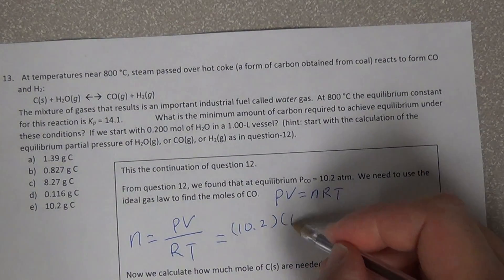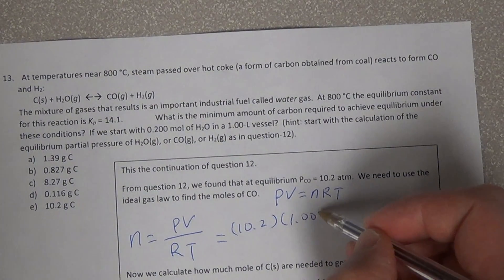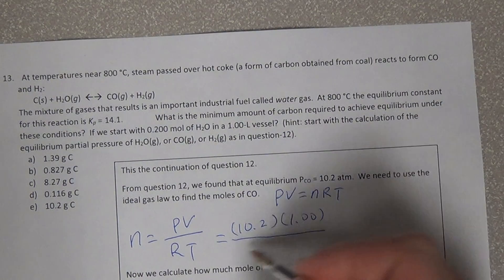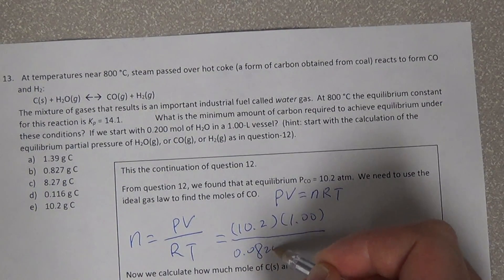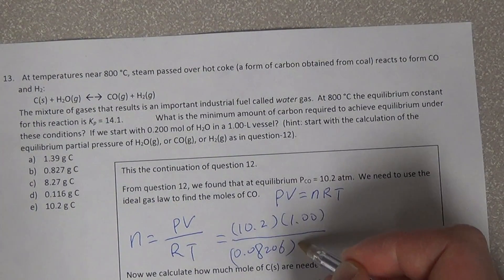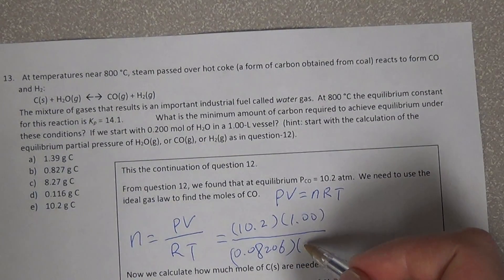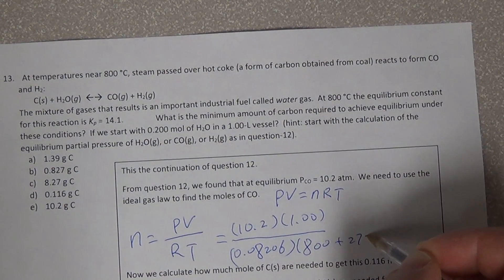The volume is 1.00 liters. The R is 0.08206. Temperature, make sure is 800 plus 273.